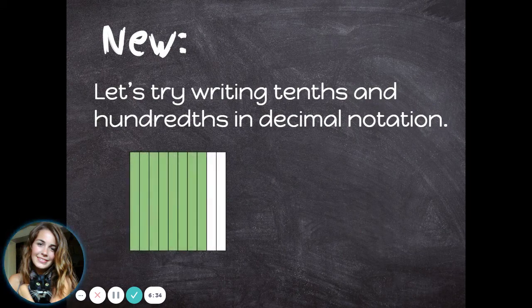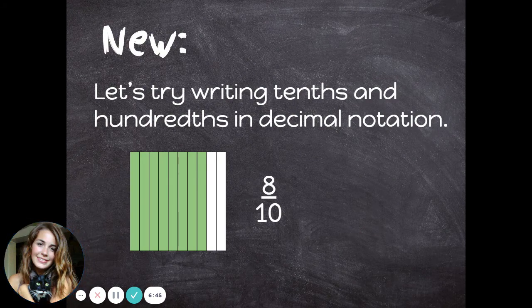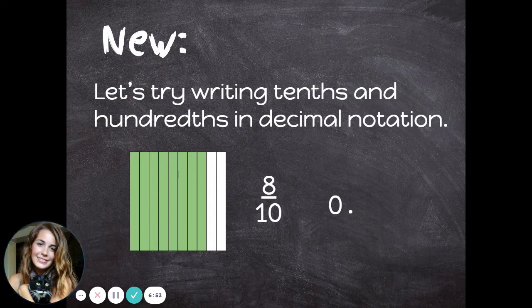Let's look at this picture. This picture has eight out of ten pieces shaded, or eight-tenths of the shape shaded. To write eight-tenths as a decimal, I still have no ones, so I'll put a zero in the ones place. Then comes the decimal, and I have eight-tenths, so I will put an eight in the tenths place.